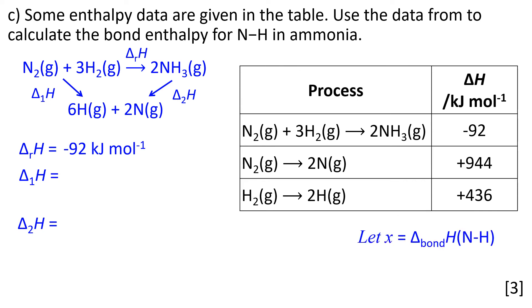If we let our unknown quantity, the bond enthalpy for N-H, equal to x, we're going to use that to construct what Δ₂H is. Δ₁H is the bond enthalpy for nitrogen, which is +944, plus 3 times the hydrogen-to-hydrogen bond enthalpy. We can work out what that number is. Δ₂H is 6 times the nitrogen-to-hydrogen bond enthalpy, so that's our value for x.